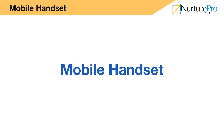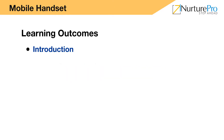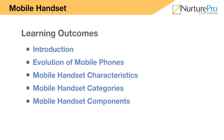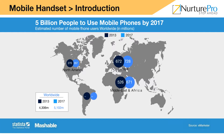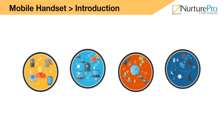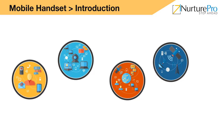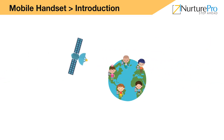Hello and welcome to i-Nurture video. In this video we will be discussing about mobile handsets. After watching this video you will be able to learn about evolution of mobile phones, mobile handset characteristics, mobile handset categories, and mobile handset components. There are billions of mobile phone users around the globe who are dependent on mobile cellular networks for communication at work, at home, or during travel. Therefore it has become essential to develop a strengthened technology network to provide support to users, but it is not an easy job.